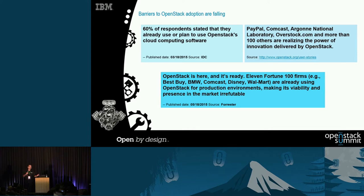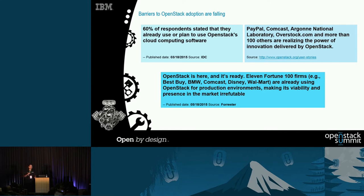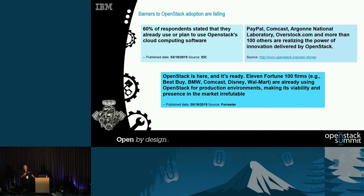For those who attended the summit in the past, you would recall significant discussion about the level of effort to install it and how testing was going. But now the discussions we hear are about production use, availability, and ability to accept innovations from the community. 60% said they have plans in place, or have already executed, to put OpenStack in production. Many of the big company names already do, and 11 of the Fortune 100 companies have production implementations of OpenStack.